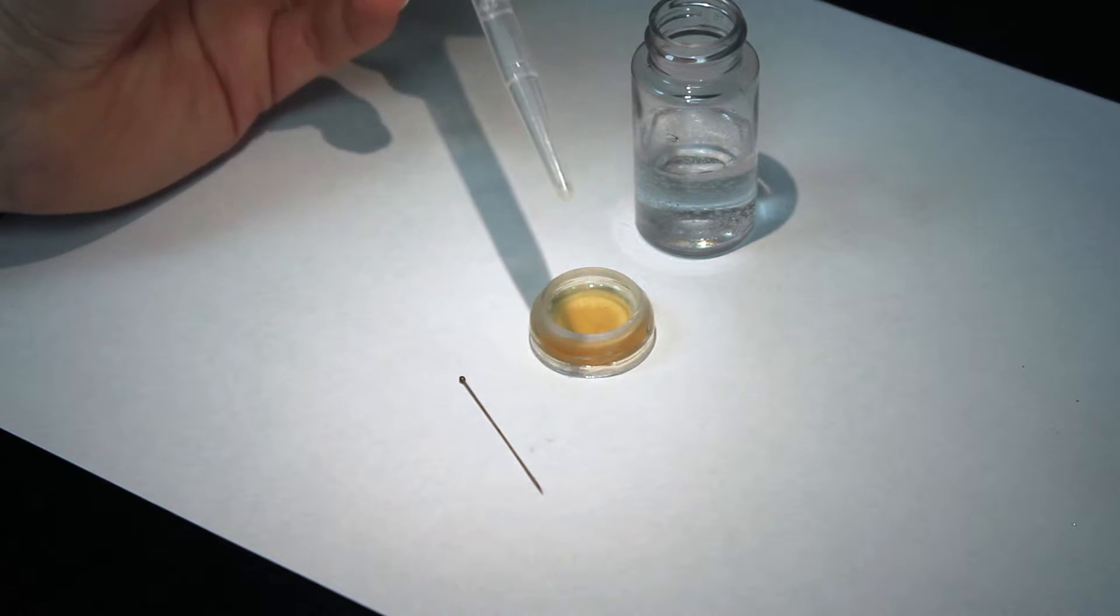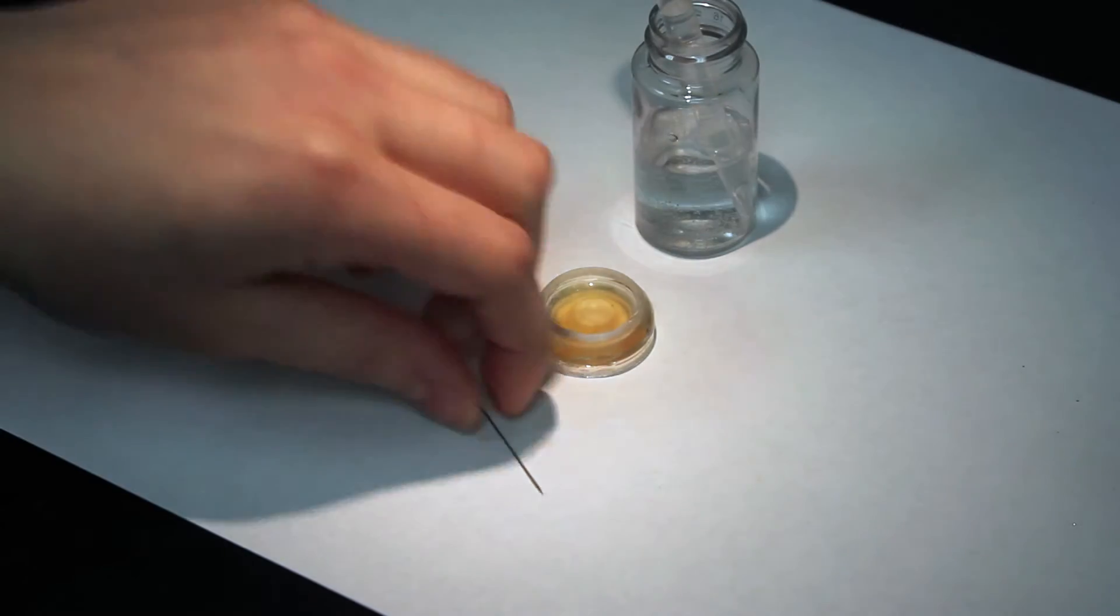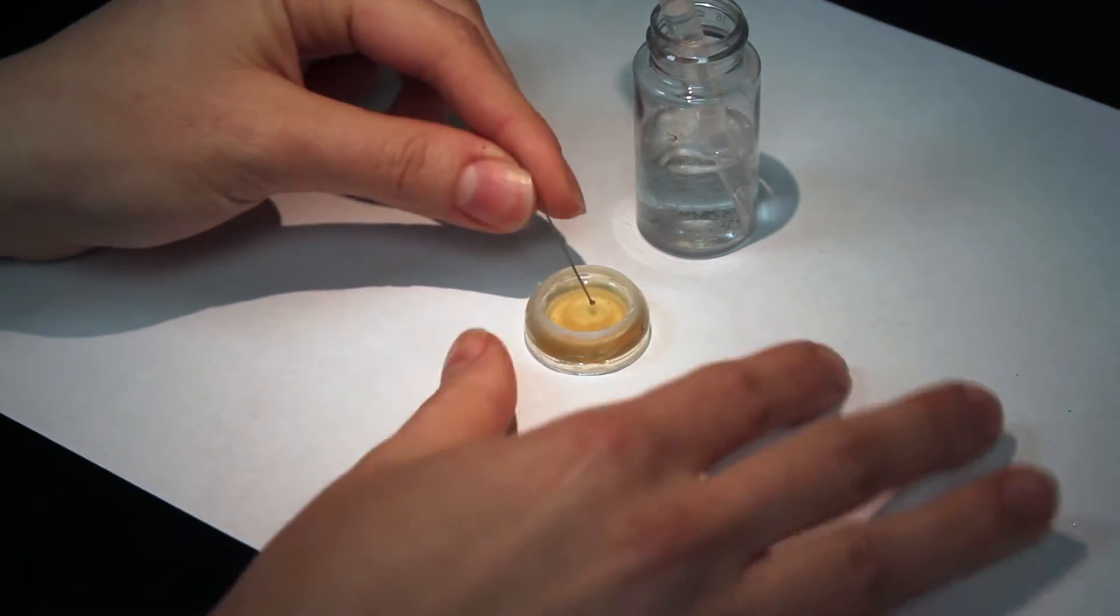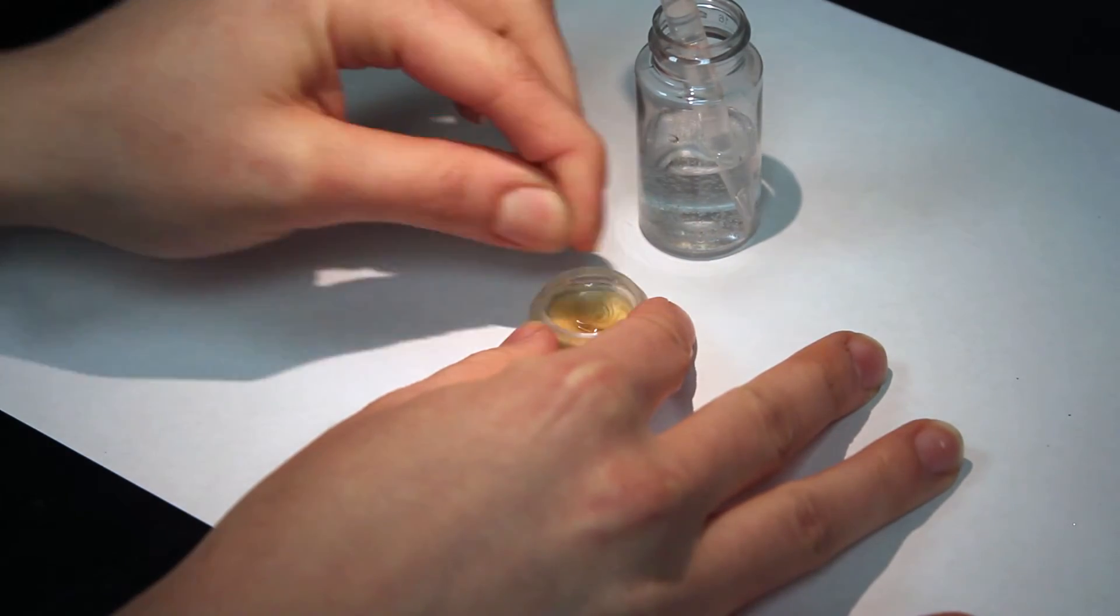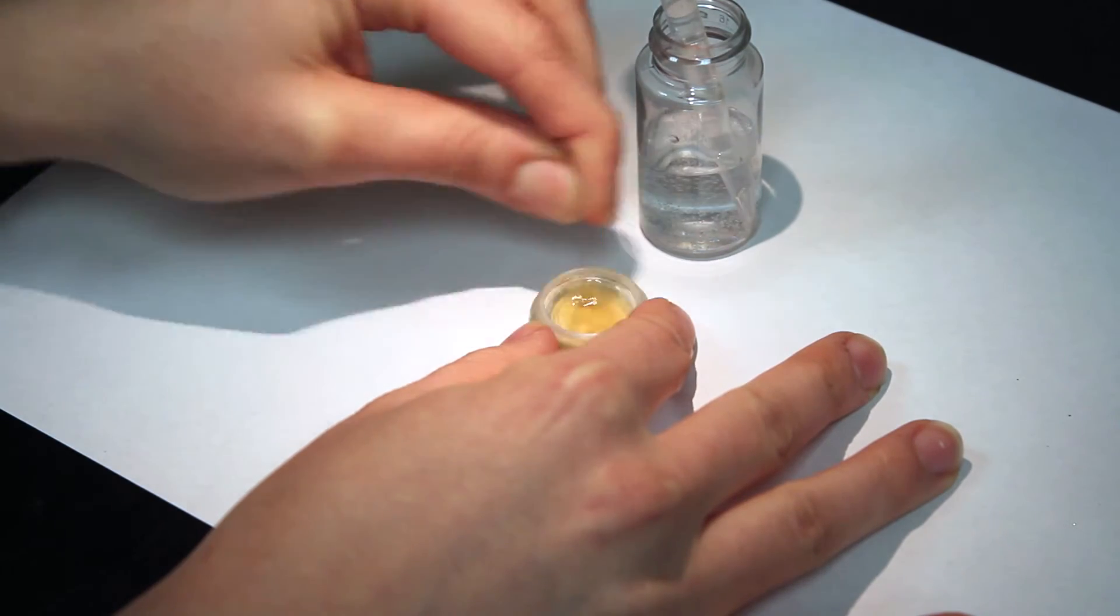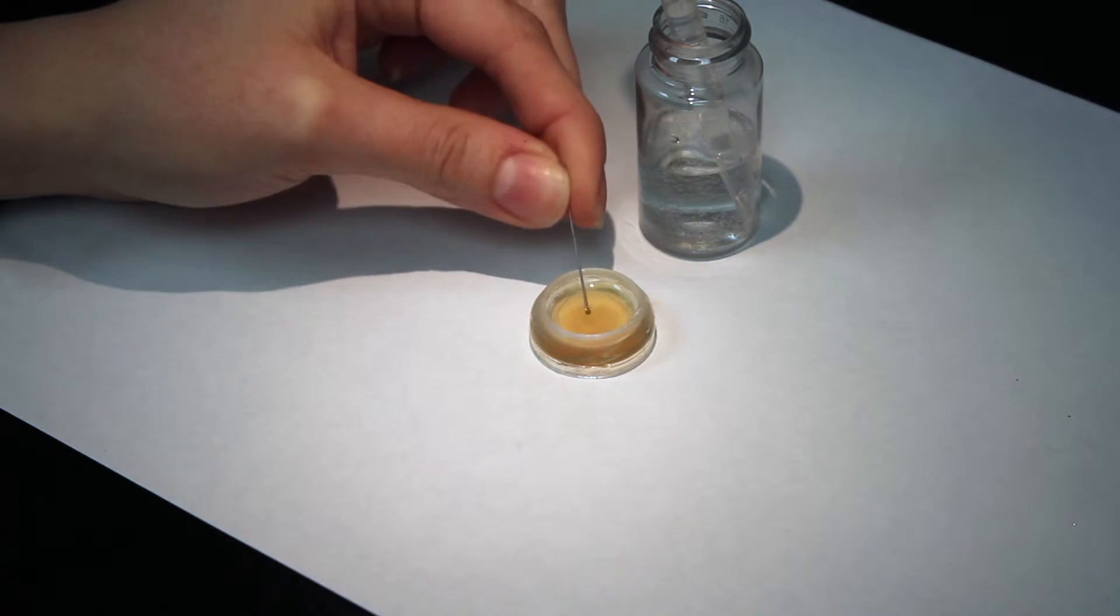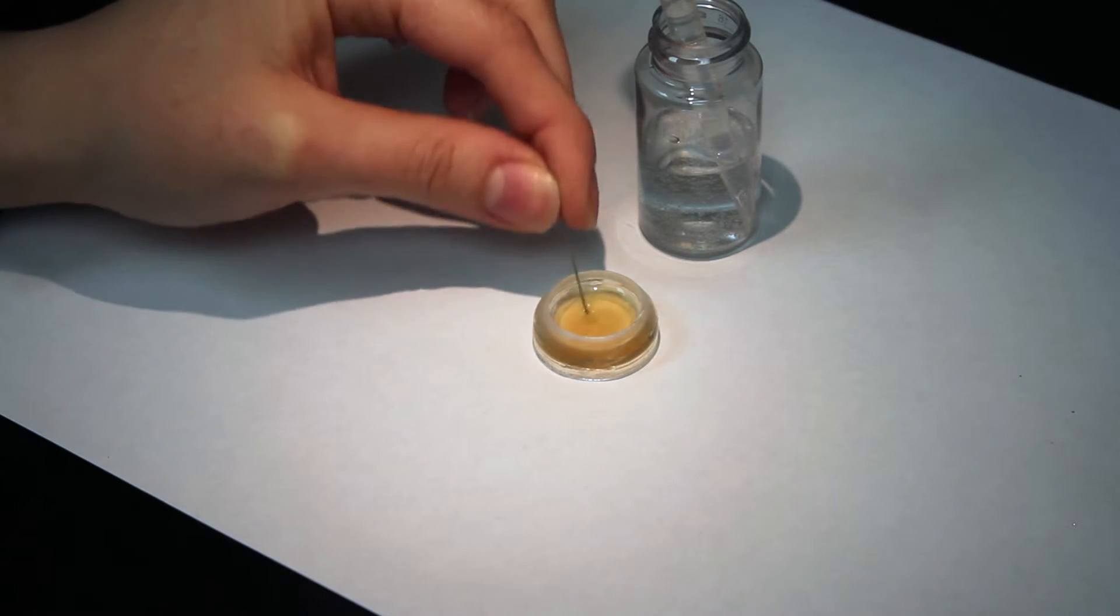So using our plastic pipette, we're going to drop a couple drops of water into our glue. And then using a stainless steel number 3 insect pin, we're going to use it to mix thoroughly. And that should be good. At the end, the glue should come off a little stringy off of the top, just like that.